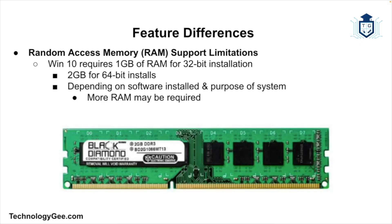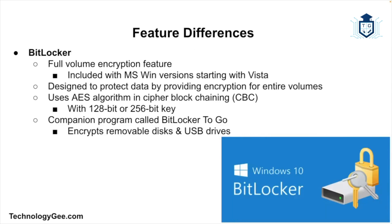Windows 10 requires at least one gigabyte of RAM for 32-bit installations and two gigabytes for a 64-bit installation. These are the minimums, and depending on the software installed and the purpose of the computer, more RAM may be recommended.